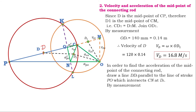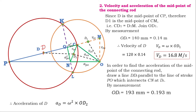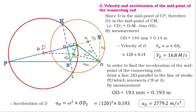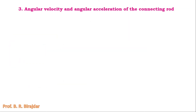Acceleration of midpoint D equals omega squared multiplied by the O to D2 distance: 120² × 0.193 = 2779.2 meter per second squared. This completes the second part: velocity and acceleration of the midpoint of the connecting rod.